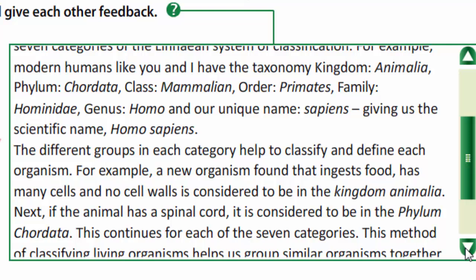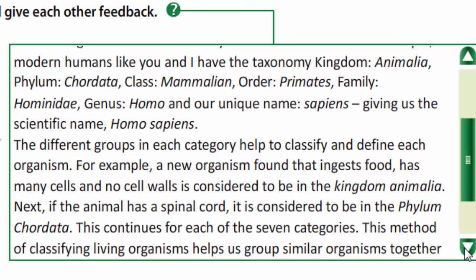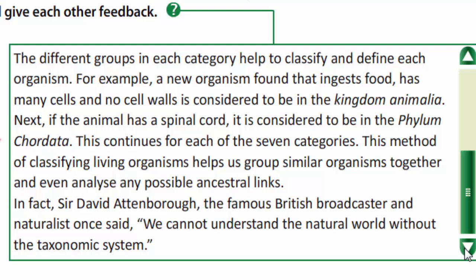The different groups in each category help to classify and define each organism. For example, a new organism found that ingests food, has many cells, and no cell walls is considered to be in the kingdom Animalia. Next, if the animal has a spinal cord, it is considered to be in the phylum Chordata. This continues for each of the seven categories. This method of classifying living organisms helps us group similar organisms together and even analyse any possible ancestral links. Sir David Attenborough, the famous British broadcaster and naturalist, once said: "We cannot understand the natural world without the taxonomic system."